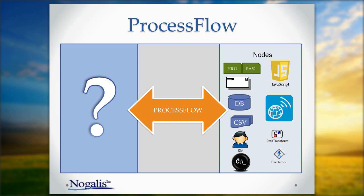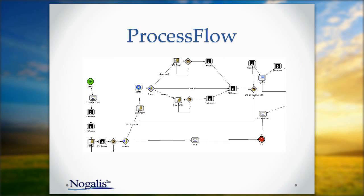There's actually quite a bit more — I'm just highlighting the main ones I think you might use. Process Flow, in its entirety, can automate the progression of tasks you might have. It can take a business process and automate all the different steps of it with as much or as little logic as you want.